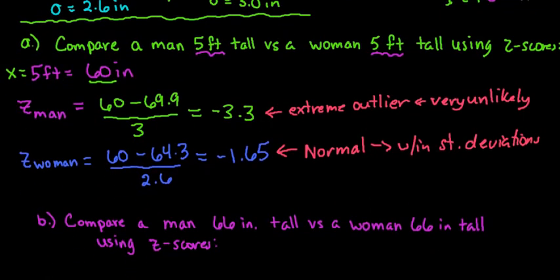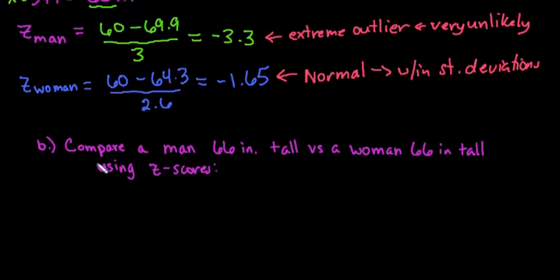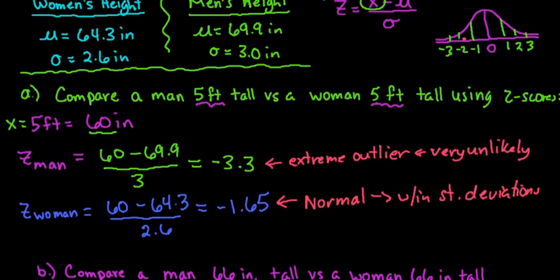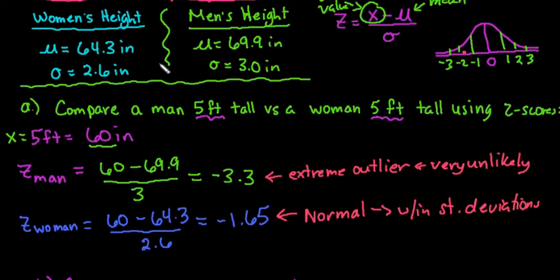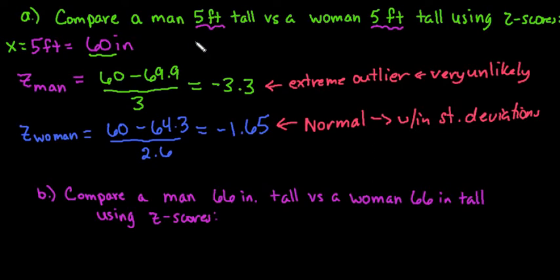So let's look at another example. For this one, it's not quite as extreme, because this time we have 66 inches tall for a woman versus 66 inches tall for a man. And you can see that 66 is closer to both of these, and with this standard deviation, it's not quite as obvious. Where the last one, it was very, very obvious that the 5 feet would be more extreme for the male than the females.